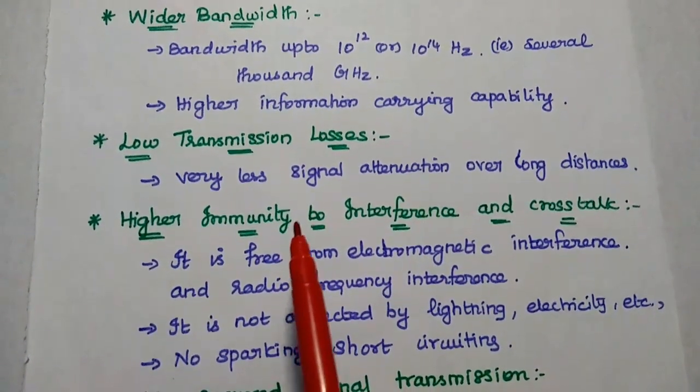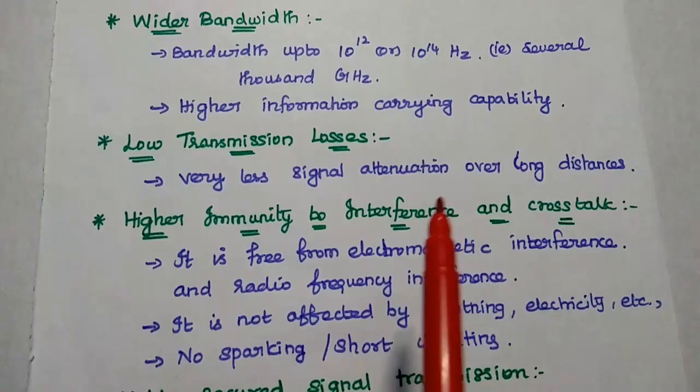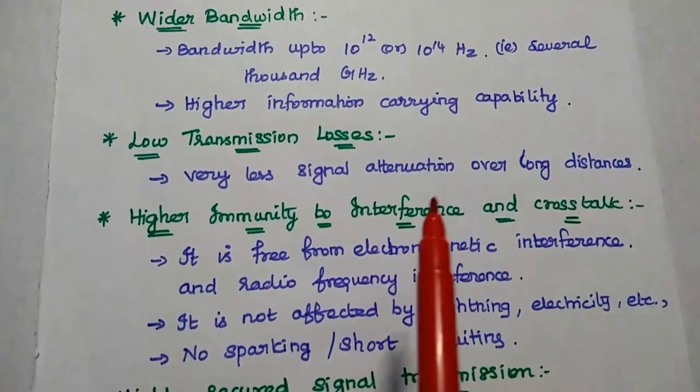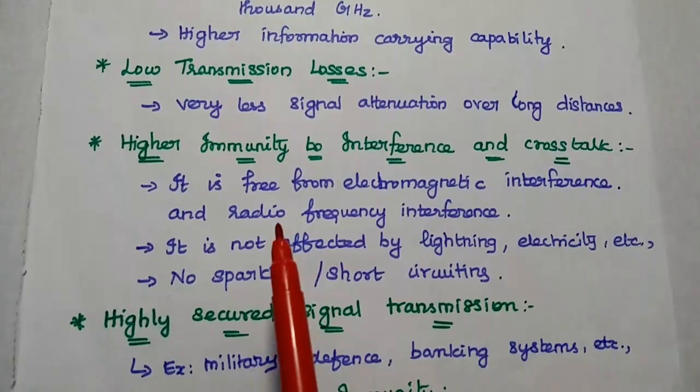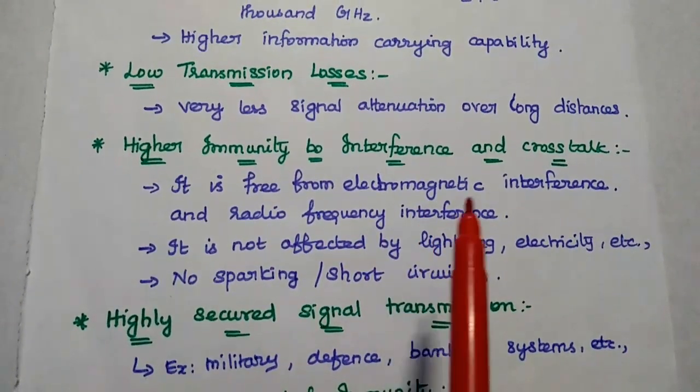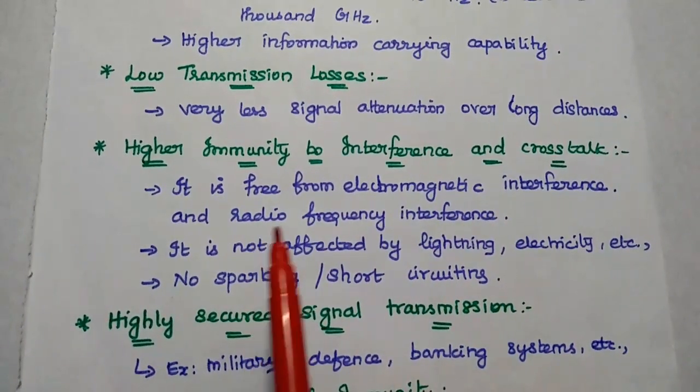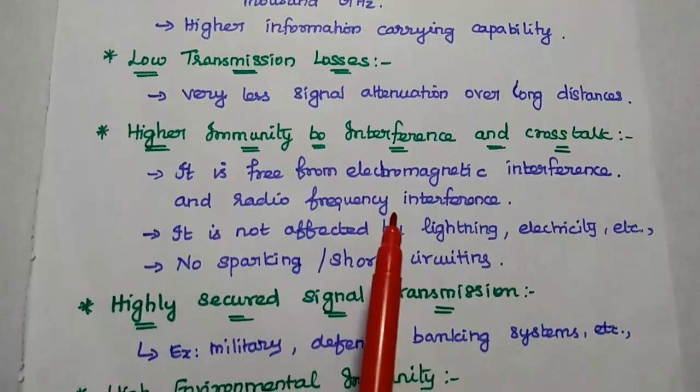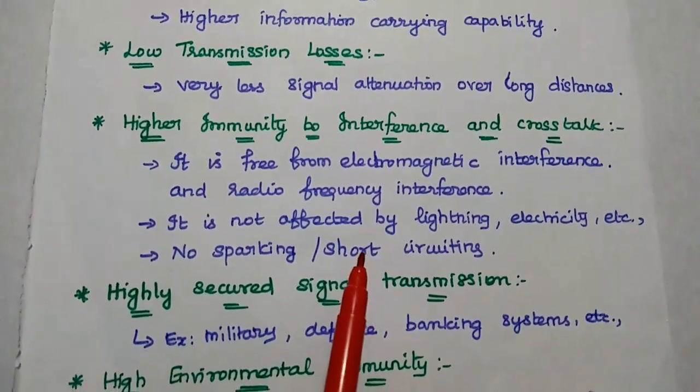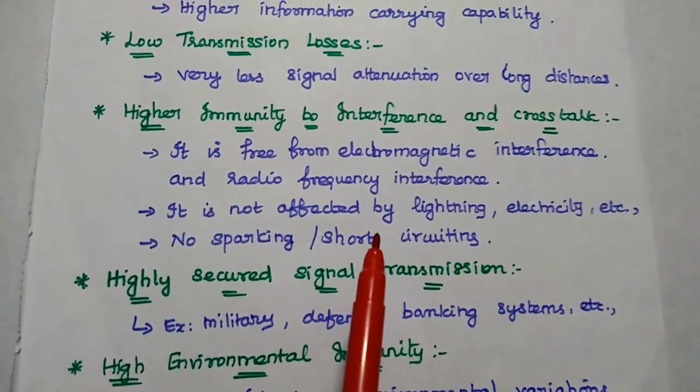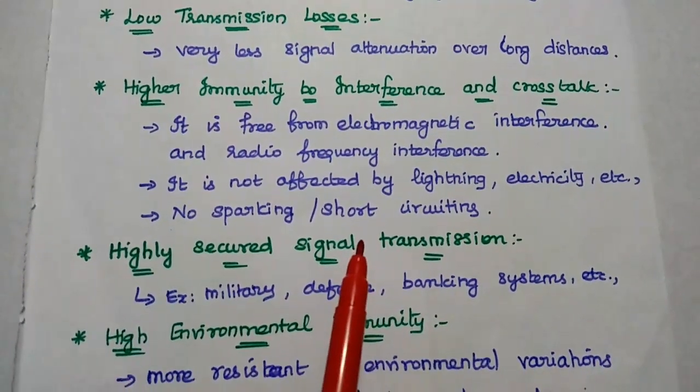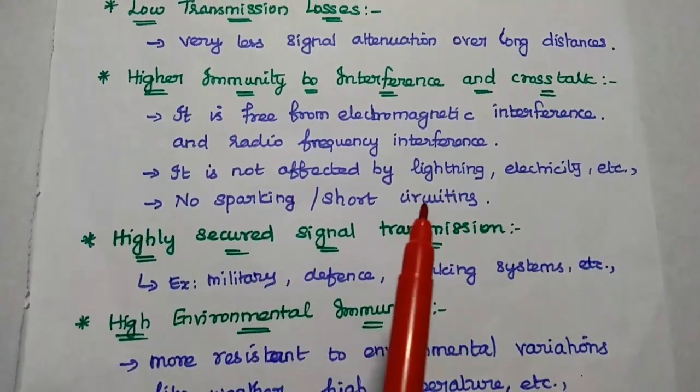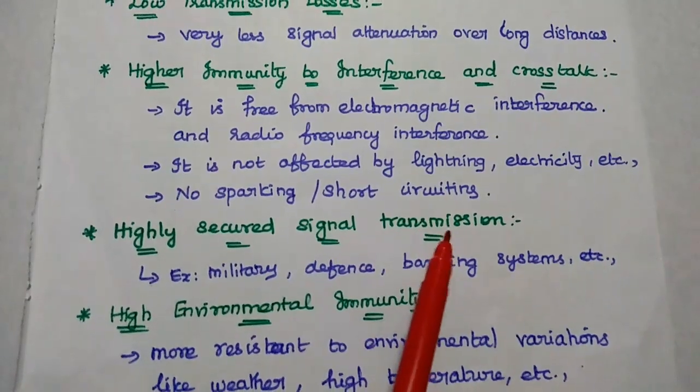Since it provides very less signal attenuation, it is mainly used for long distance transmission. It has very high immunity to interference and cross-talk. It is free from electromagnetic interference and radio frequency interference. It is not affected by lightning, electricity, sparking, etc. It has very high immunity to interference as well as cross-talk.